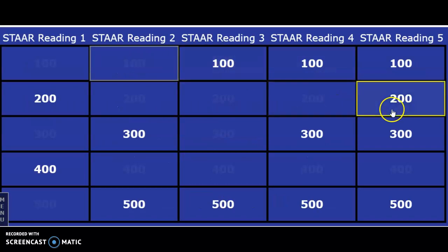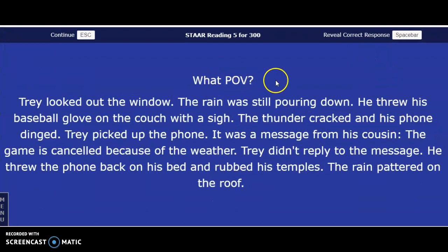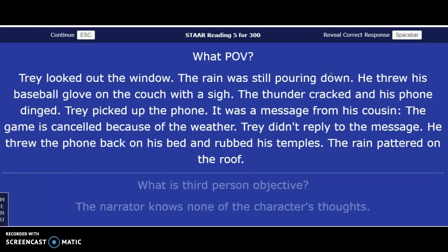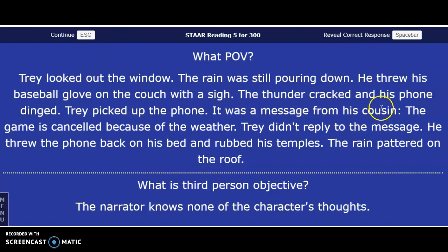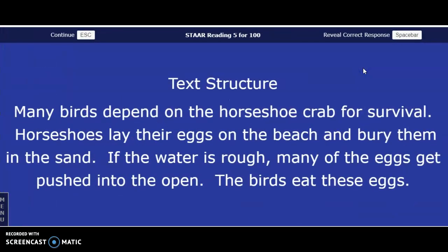What point of view? Trey looked out the window, the rain was still pouring down. He threw his baseball glove on the couch with a sigh. The thunder cracked and his phone dinged — it was a message from his cousin: the game was canceled because of the weather. Trey didn't reply to the message, he threw the phone back on his bed and rubbed his temples. The rain pattered on the roof. What is the point of view? The answer in three, two, one — third person point of view. The pronouns 'his' and 'he' let us know it is third person.